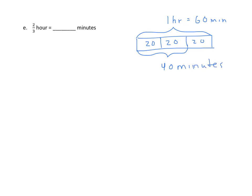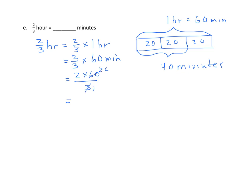Mathematically, two-thirds of an hour equals two-thirds times one hour, which is the same as two-thirds times sixty minutes. We solve two times sixty over three. Both three and sixty are divisible by three, and we get forty minutes once again.